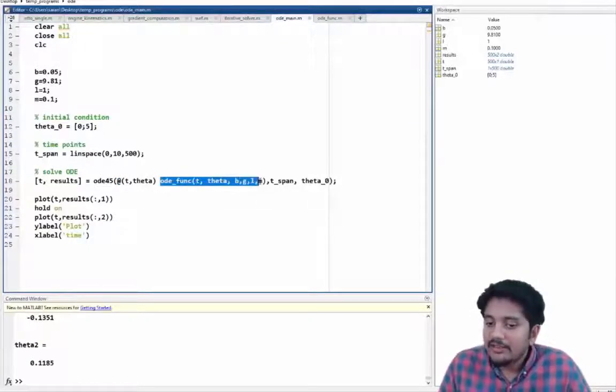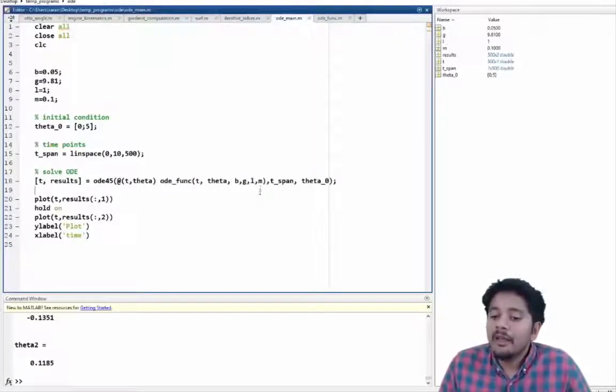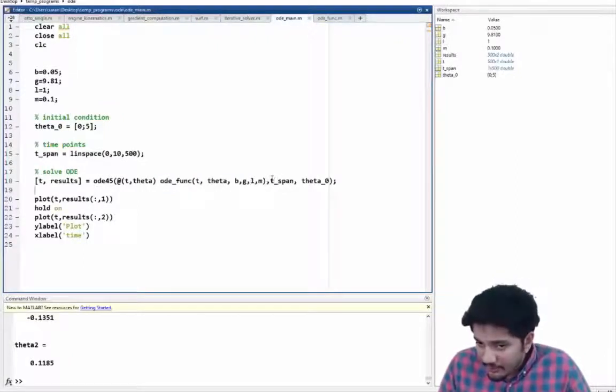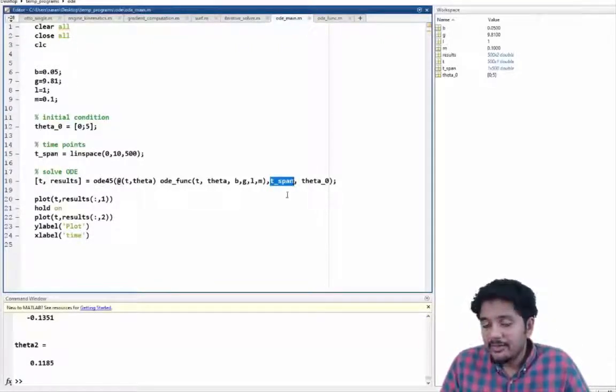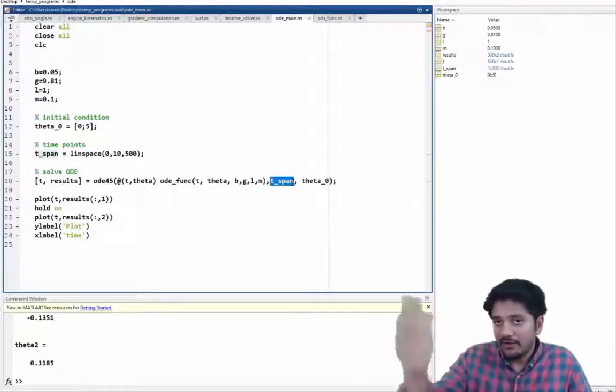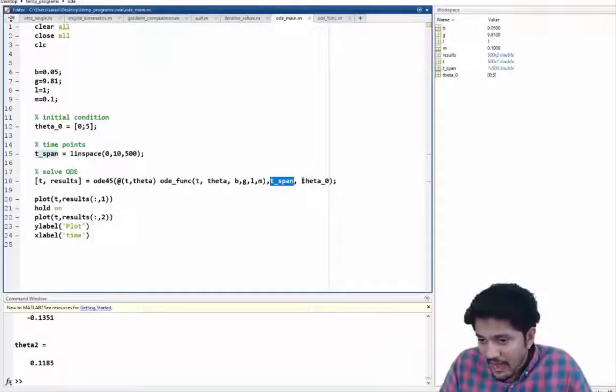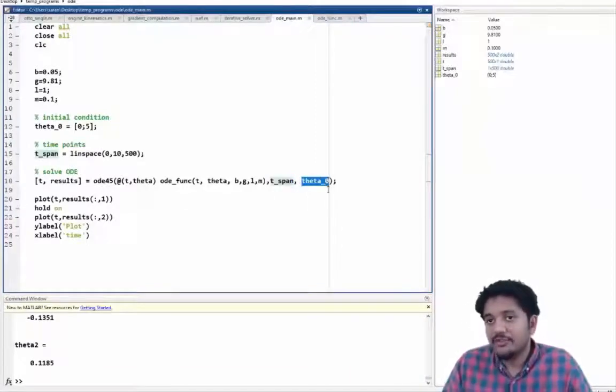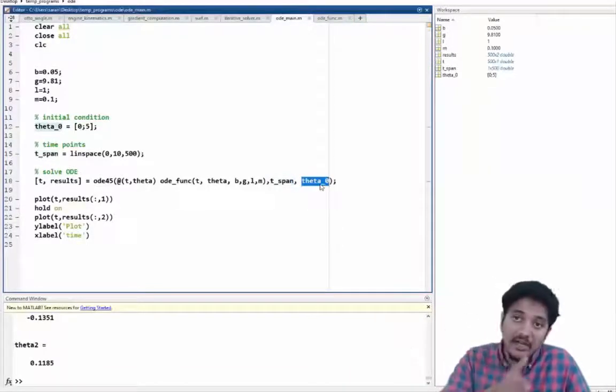So ODE underscore func is t comma theta followed by b, g, l and m. So these are the input parameters that we will be passing and after that we provide the time array which basically says how far the integration needs to be done and then the initial conditions corresponding to the starting of your time.